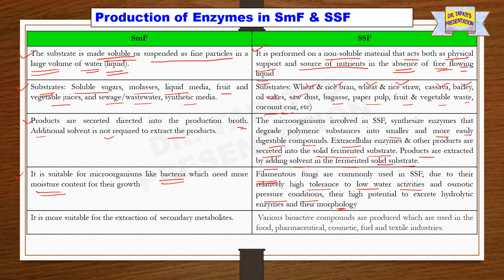In the case of SMF, it is more suitable for the extraction of secondary metabolites which are required in liquid state. Whereas in SSF, various bioactive compounds are produced which are used in food, pharmaceutical, cosmetic, oil, and textile industries.